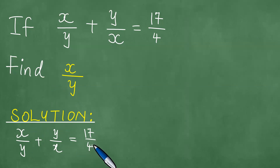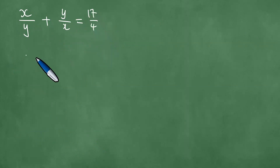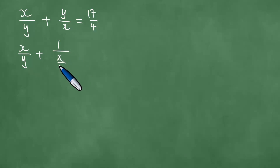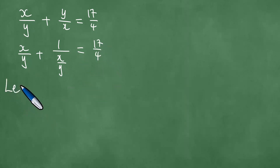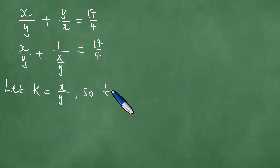So if this is given to us, we proceed as follows. We note that x over y plus y over x can be written as x over y plus 1 out of (x over y), which equals 17 quarters. If we let k be x over y, we can use substitution into this equation of the variable k.